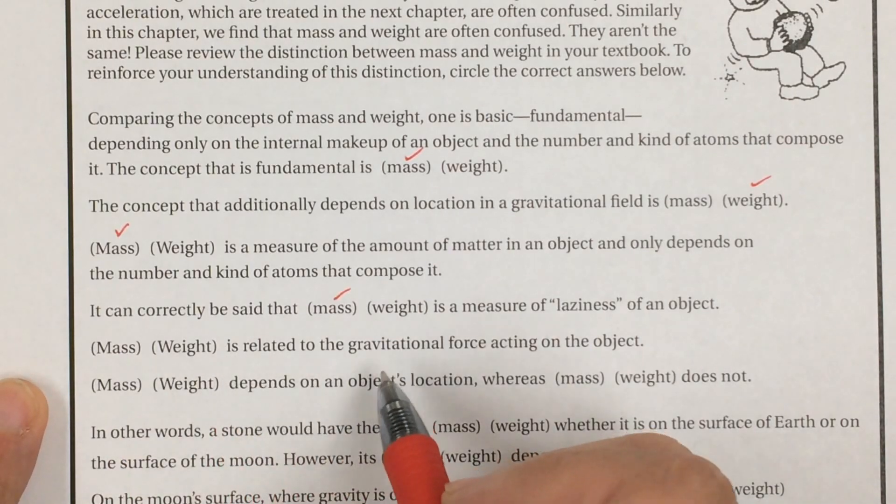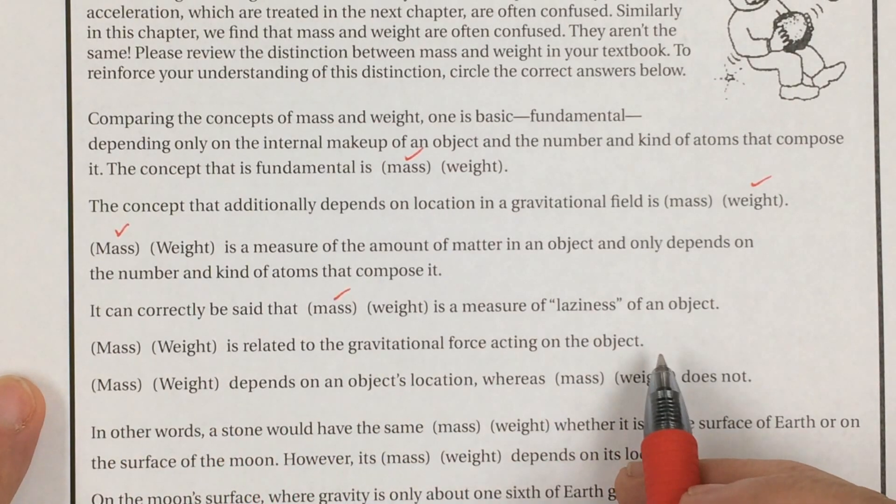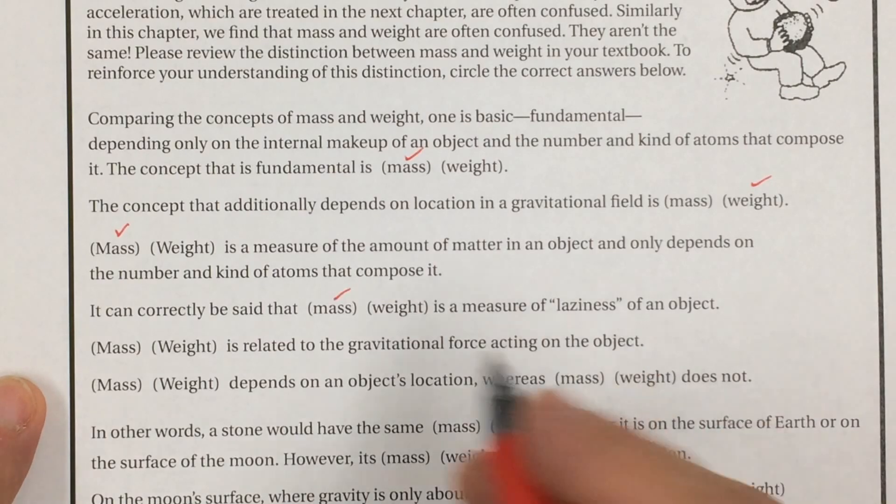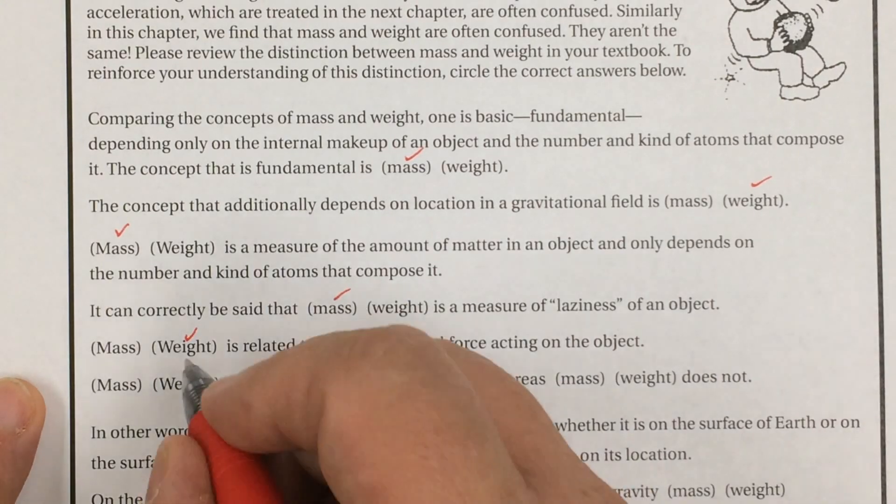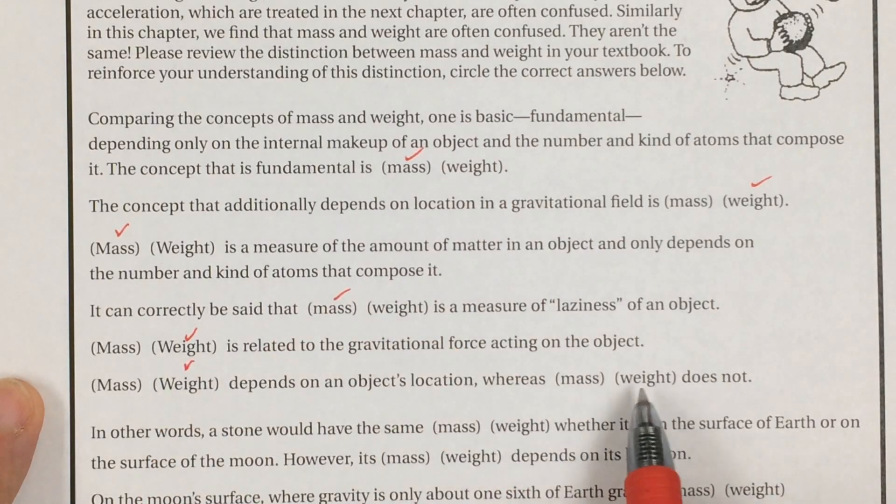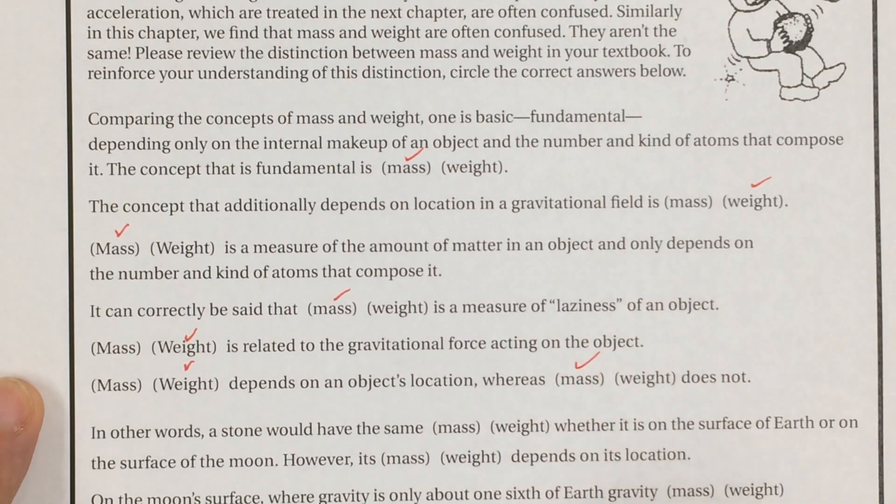Mass or weight is related to the gravitational force acting on the object. By now I hope you're getting it. That's the weight. Weight is based on gravity. Mass is not. Mass or weight depends on an object location. Which one is based on which gravity field it's in. That's weight. Whereas what doesn't change depending on what gravity field you're in. Your mass doesn't change.